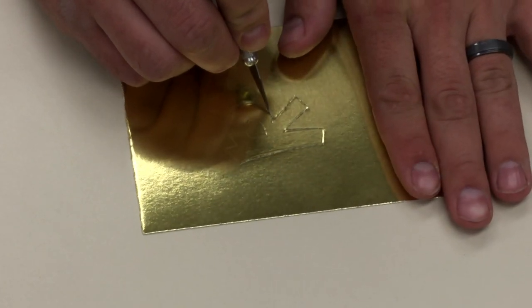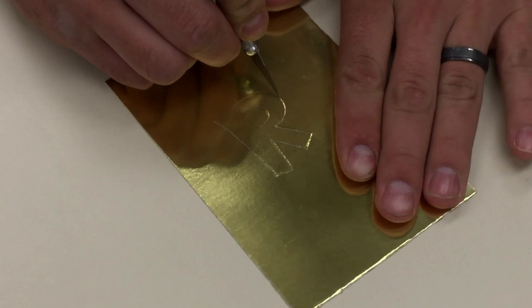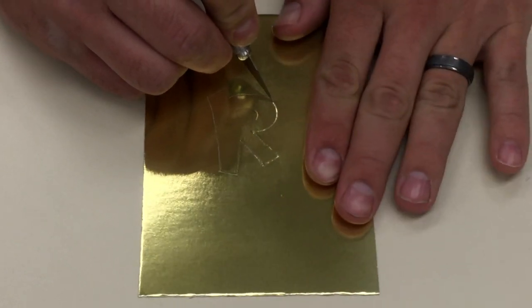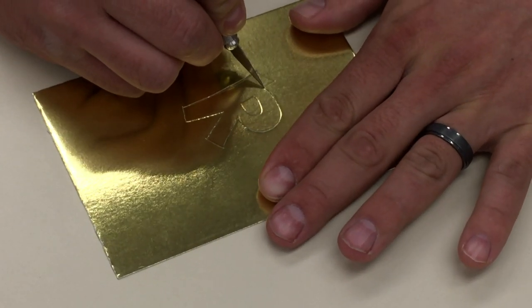Whenever you're carving a rounded edge, it's easier, I think, to rotate the paper, than to try and rotate your hand and the blade.